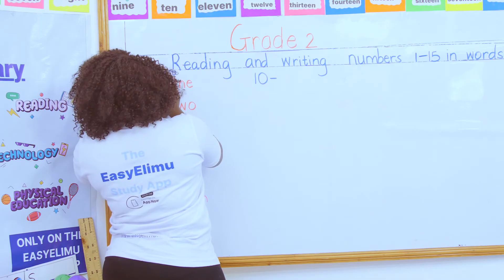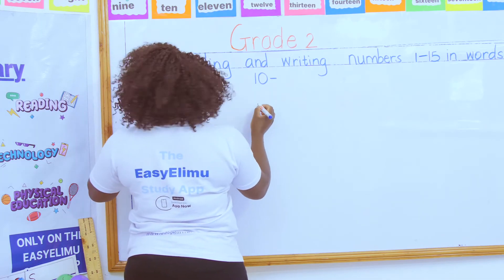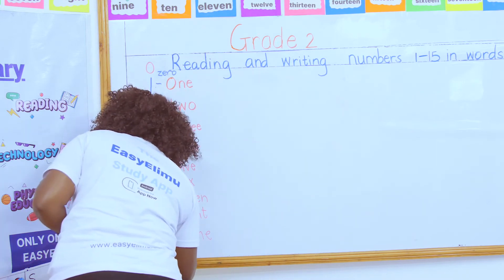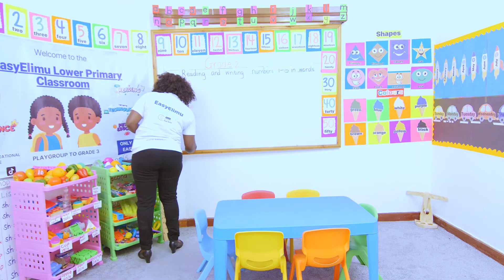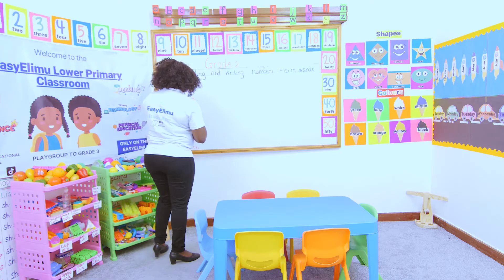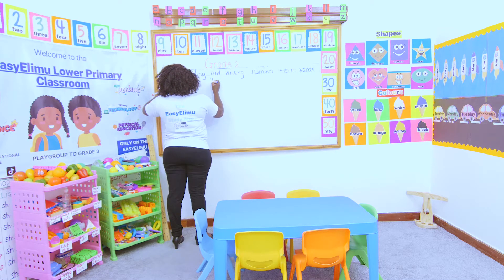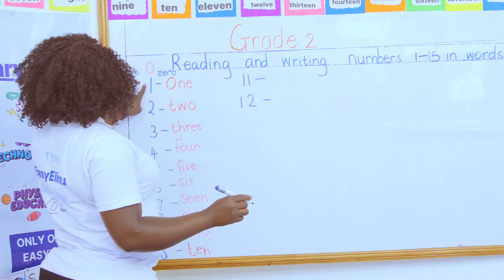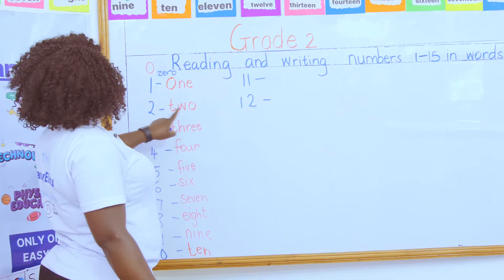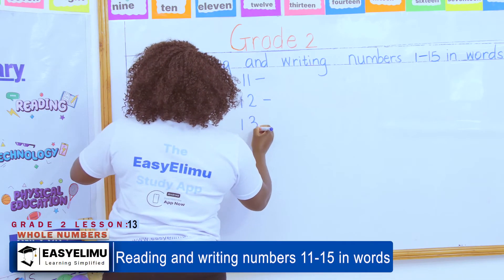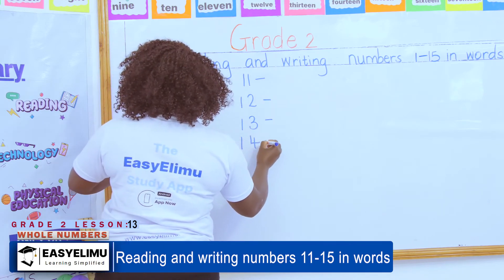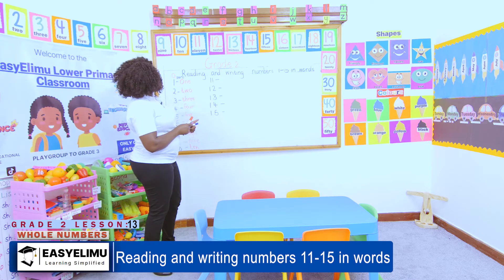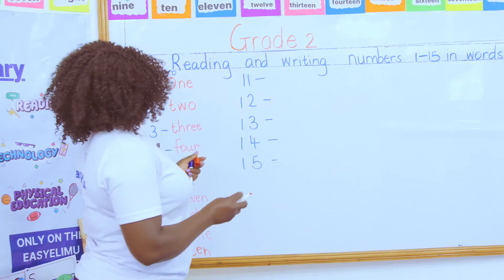To form number ten you need a one and a zero. Now we want to form the teens — numbers from ten to fifteen. It is 10 plus 1 to get 11, 10 plus 2 to get 12, 10 plus 3 to get 13, 10 plus 4 to get 14, and 10 plus 5 gives us 15. How do you write these numbers in words?